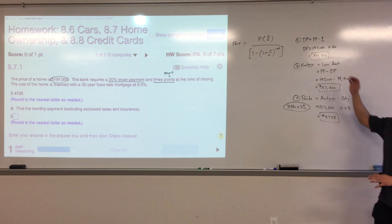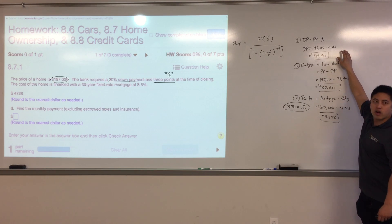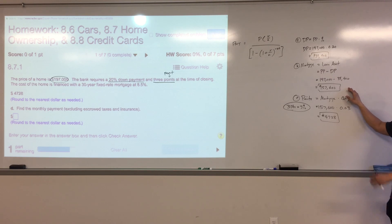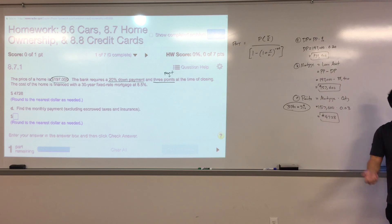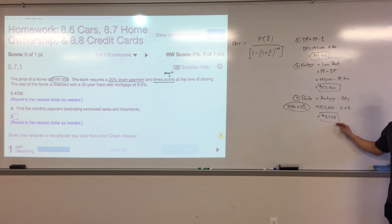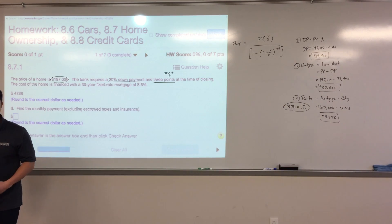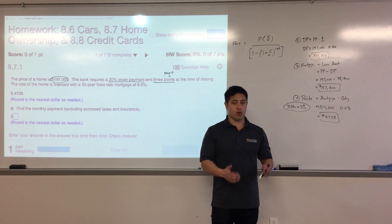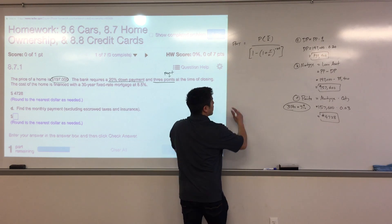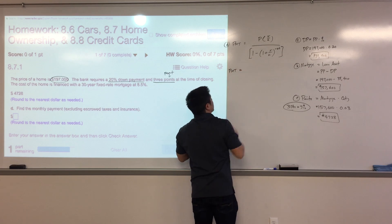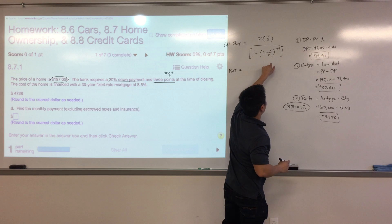To summarize up to this point: a down payment is usually required; your mortgage amount is purchase price minus the down payment; and that amount is assessed at some percentage to determine the closing fee. Now we want to know our monthly payment. The formula is PMT = P × (R/N) divided by [1 − (1 + R/N)^(−NT)]. This is part D.